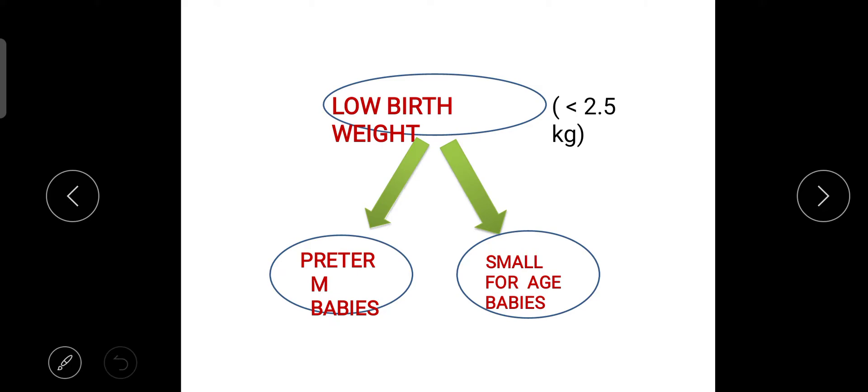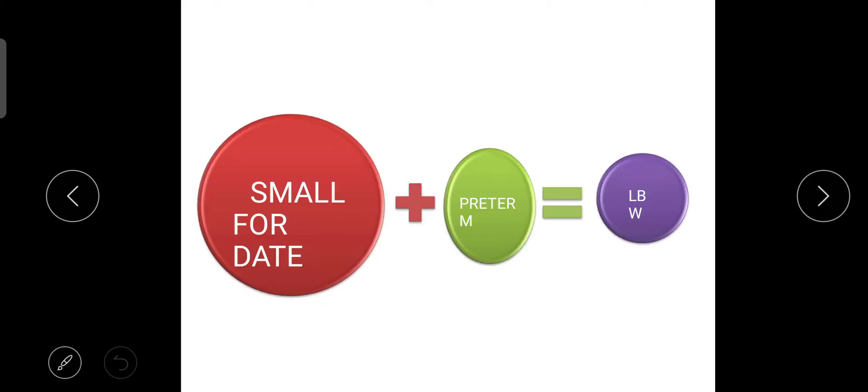You know what is low birth weight. Low birth weight means if the baby is below 2.5 kg. In India 2.5 kg is normal weight for a newborn, so if it is below 2.5 kg we will consider them low birth weight. That also categorizes into two types: one is preterm and one is small for age babies. So small for age plus preterm equals low birth weight.